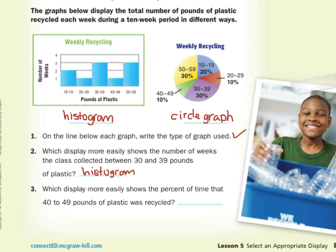Which display more easily shows the percent of time that 40 to 49 pounds of plastic was recycled? Well, this was one week out of 10. And so 1 over 10 is the same thing as 10 over 100, which is 10 percent. All right. Here, if we look 40 to 49, this is 10 percent. Again, I don't know about you, but I think the circle graph more easily shows that percentage.